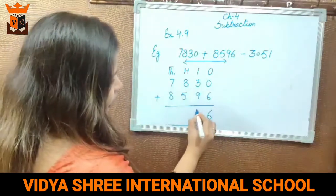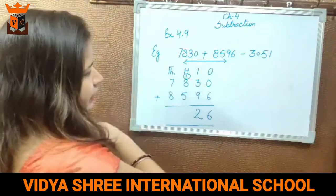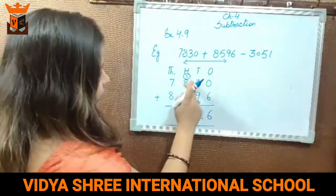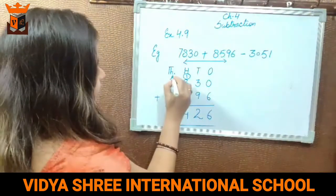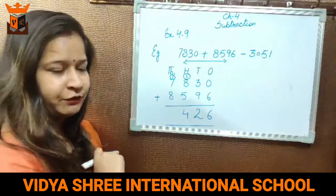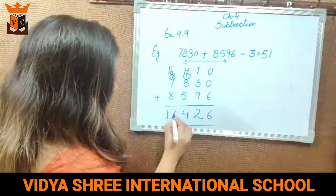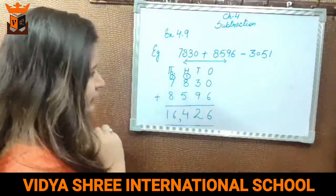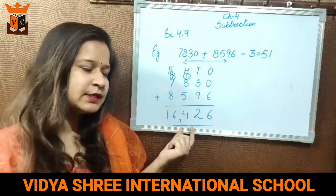3 plus 9 is 12 — write 2 here, and 1 will be your carry. 8 plus 1 is 9; 9 plus 5 is 14 — write 4 here, and 1 is carry again. 8 plus 7 is 15; 15 plus 1 is 16. So the answer is 16,426. When we add the two numbers, we get 16,426.